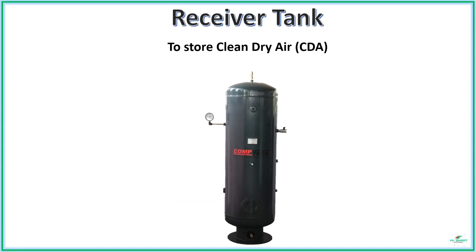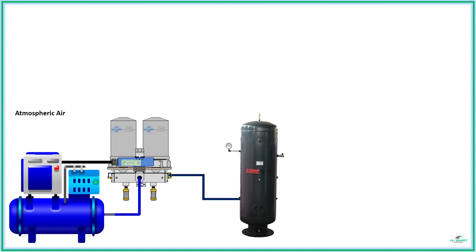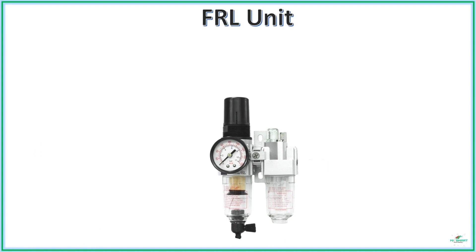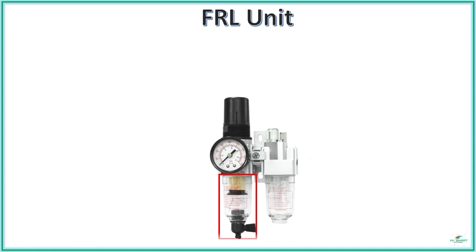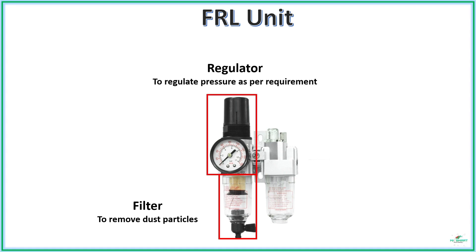Each pneumatic circuit requires different pressure and condition of air. When the air enters the specific pneumatic circuit, it is further regulated by a unit called an FRL unit. An FRL unit is the combination of three unique components: a filter, a regulator, and a lubricator.